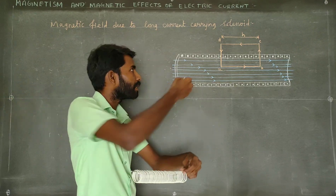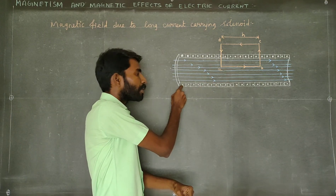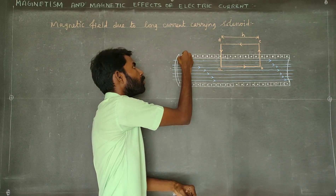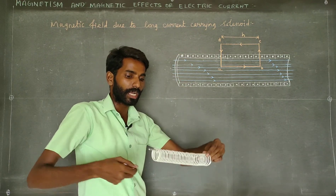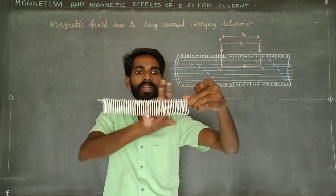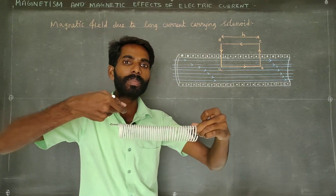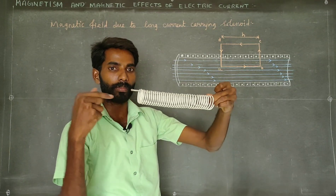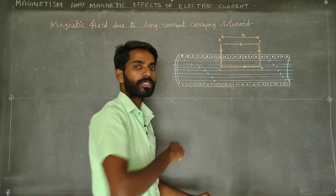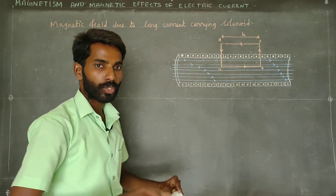All current exists at a starting point. The current direction will be indicated by a dot for out of the page and a cross for into the page. Looking at each turn, the current direction will be down on one side. Using these current directions, we can determine the magnetic field direction inside the solenoid.